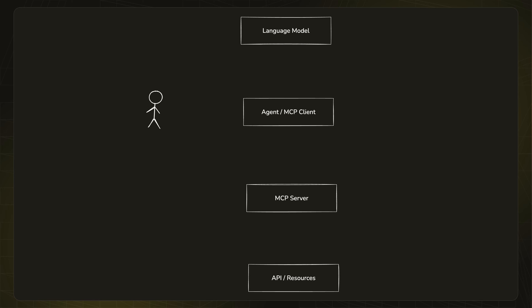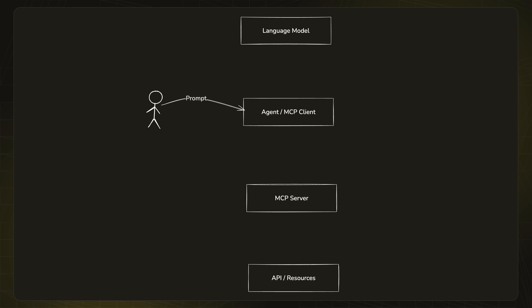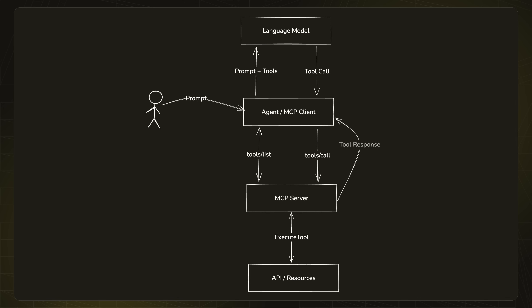To illustrate how MCP works in practice, let's use a simple example. First, the user sends a prompt to the agent, with the agent retrieving the available tools from the MCP server. The agent then sends the prompt and tools list to the model. The model then responds with a tool call that the agent relays to the MCP server. The MCP server then executes the request against the external API resource, returning the result to the agent, who then forwards it to the model. After processing the data from the tool call, the model is able to respond to the user's initial prompt.